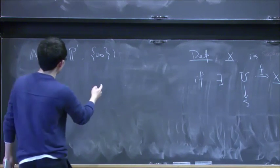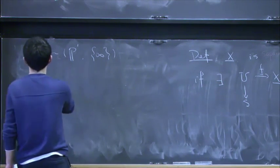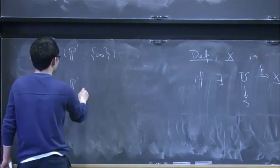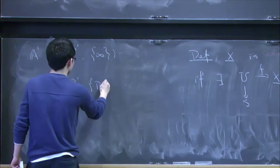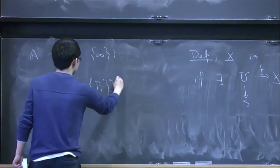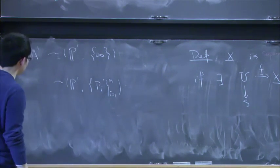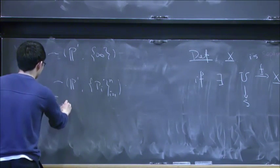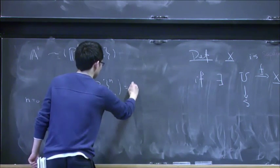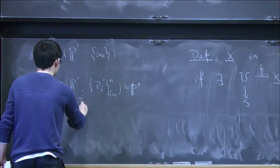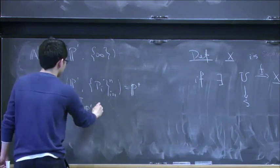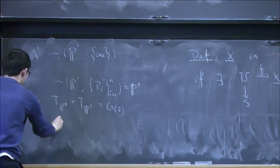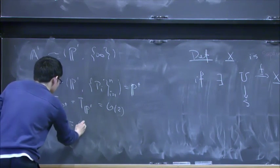And so you can talk about its log tangent bundle this way. So and you can also consider, similarly, you can consider P1 together with bunch of points. And so when N equals zero, the tangent bundle is just P1. Let me call this P dagger. So the log tangent bundle is just tangent bundle of P1. So it's O(2). And if you add one boundary point, then this one becomes O(1).